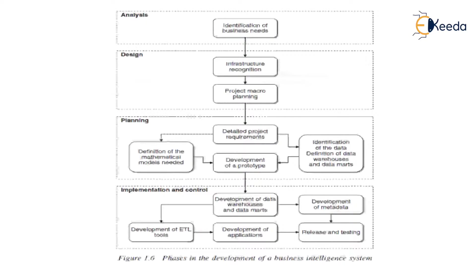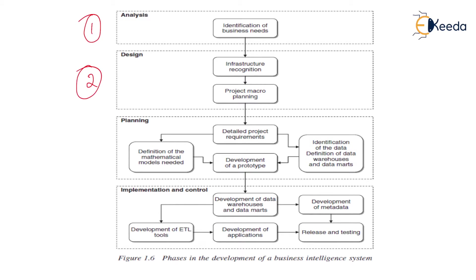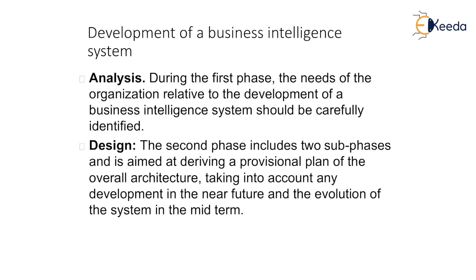The development of a business intelligence system involves four phases. The first phase is the analysis phase, where they perform identification of business models. The second is the design phase, covering infrastructure recognition and project micro planning. The third is the planning phase, where development processes and methodologies are defined and data for the data warehouse and data mart is identified. The fourth phase is implementation and control, where the data warehouse, metadata, ETL tools, and testing tools are developed.